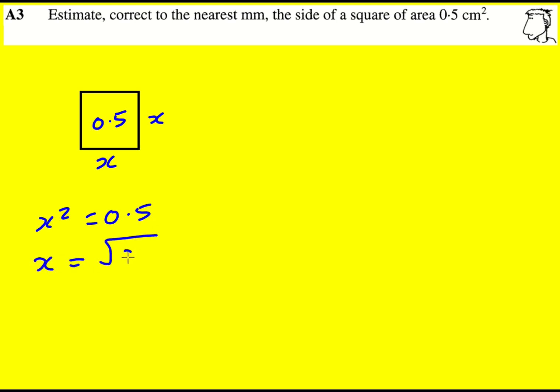So x will be the square root of 0.5. And we're only working out to the nearest millimeter. So think about what numbers multiply together to give something that's close to 0.5.